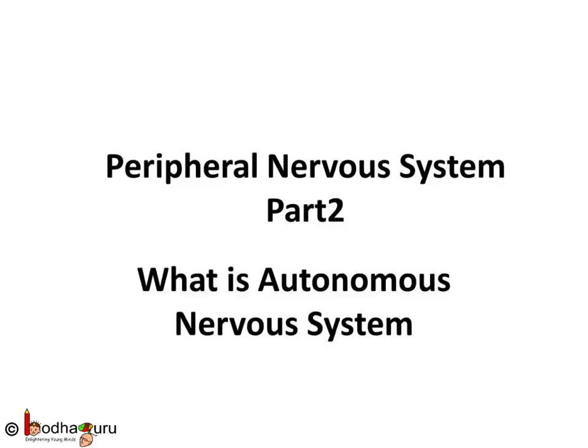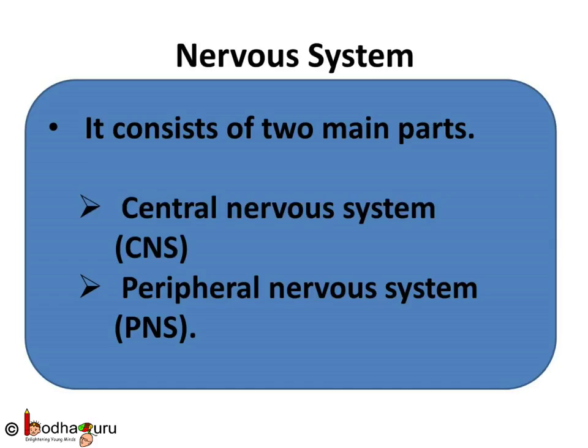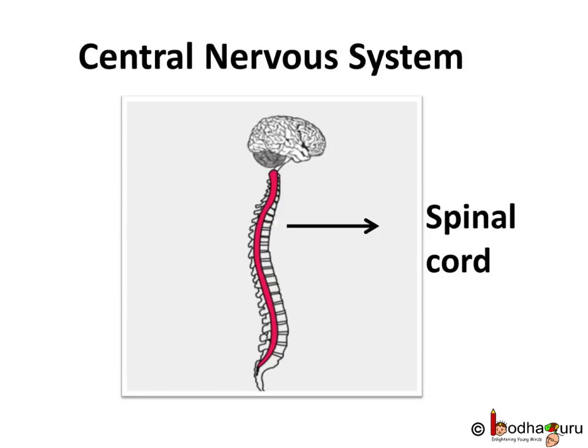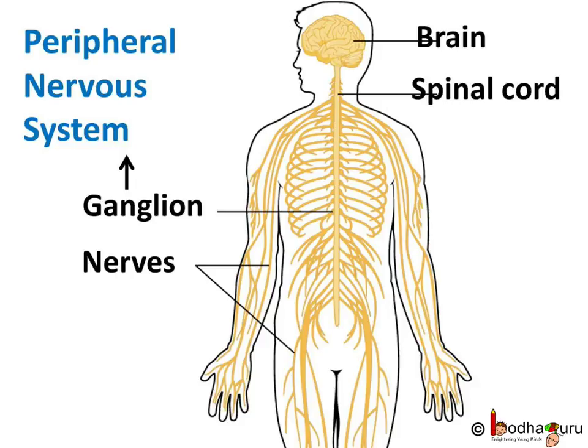Hello everyone. We already know the nervous system consists of two parts: the central nervous system and the peripheral nervous system. The central nervous system consists of the brain and spinal cord, whereas the peripheral nervous system consists of the nerves and ganglia outside of the brain and spinal cord.